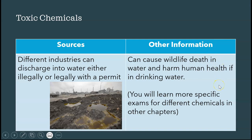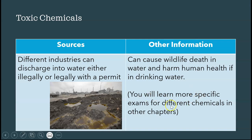Depending on the toxic chemical, it can cause human health damage and wildlife death. Examples include cyanide and arsenic from gold mining, DDT, and PCBs. Other chapters will cover specific chemicals and their effects in more detail.